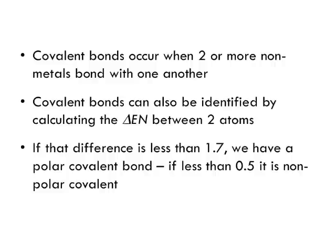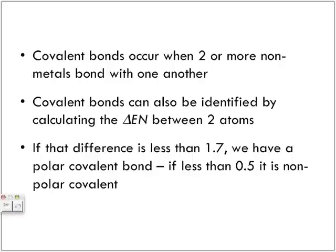A polar covalent bond has an electronegativity difference less than 1.7. Remember, even though we know from looking at the periodic table that metal plus nonmetal equals ionic, and nonmetal plus nonmetal equals covalent, we should still be calculating the change in electronegativity.